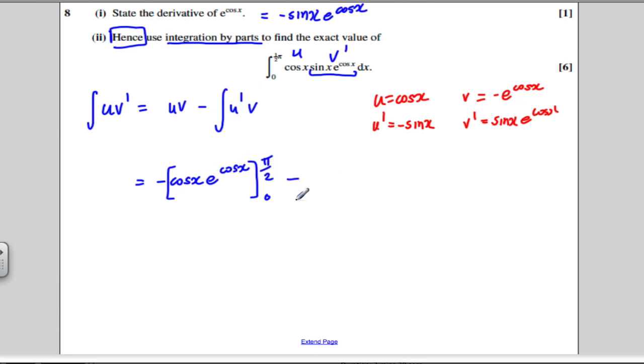And then this is subtract the integral between 0 and pi over 2 of u dash v of minus sine x times minus e to the cos x, so that would be the integral of sine x e to the cos x with respect to x.